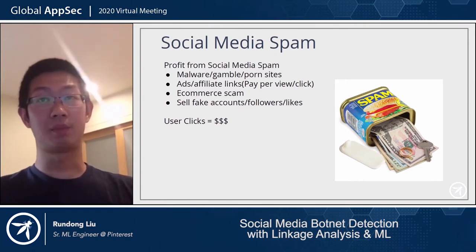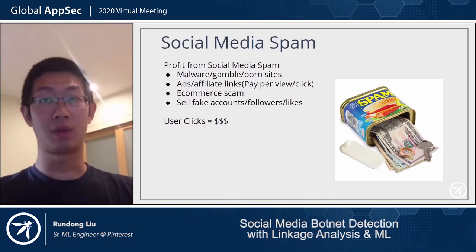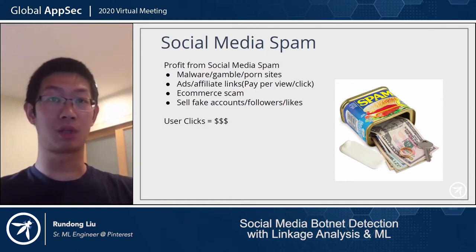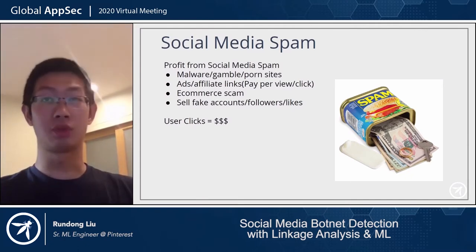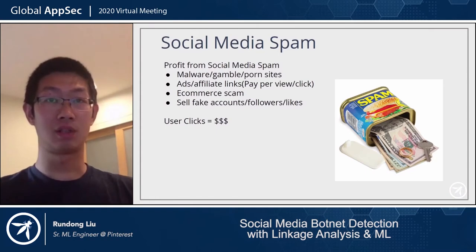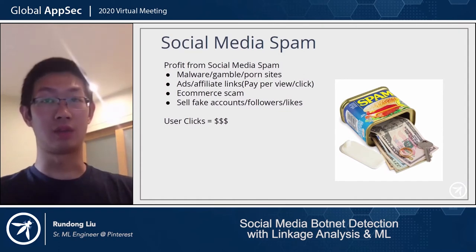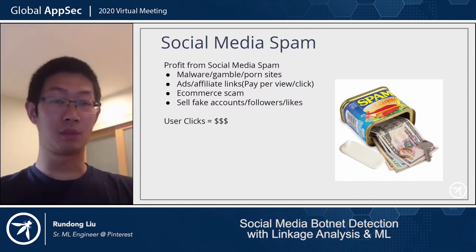There are various ways spammers can make profit from social media platforms. They distribute malware, gambling, and porn sites. They also share excessive ads or affiliate links, utilizing the pay-per-view or pay-per-click model to make money. We've also seen spammers promote e-commerce scam sites where users make a purchase but never receive a product. Spammers also sell fake accounts, followers, or likes to satisfy people's ego. Most spam is all about user clicks — more traffic means more money.